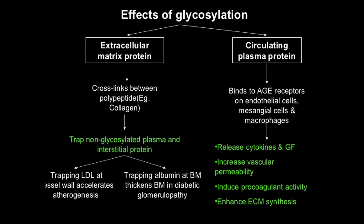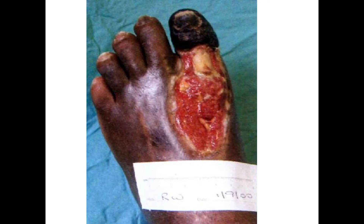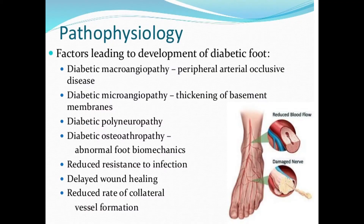These advanced glycosylation end products entangle with different types of proteins and lipids, and there are increased chances of atherosclerosis. The basement membrane is going to be thickened, and this is what happens in a diabetic patient — the basement membrane thickens. Excess glucose acts as a toxic substance in multiple ways. This diagram shows the pathophysiology of the diabetic foot.